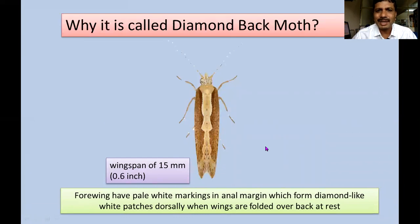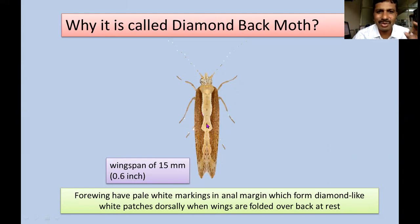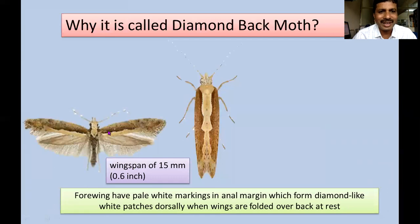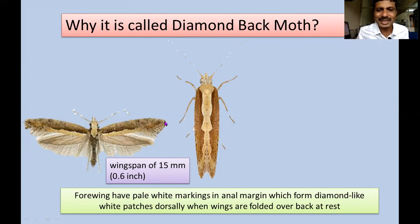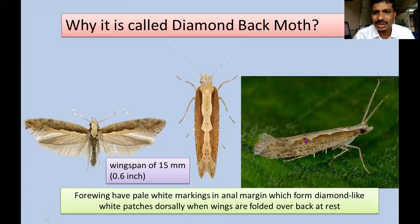Why is it actually called Diamond Backmoth? When you use the word 'back' it is almost always referred to either thorax or abdomen. Here, when the insect is in the sitting posture, you'll find diamond-shaped markings. These whitish or pale yellowish colored markings are actually found on the anal margin of the forewings. When both pairs of wings are brought together, this type of diamond-shaped marking appears on the back. Hence it is actually called Diamond Backmoth.